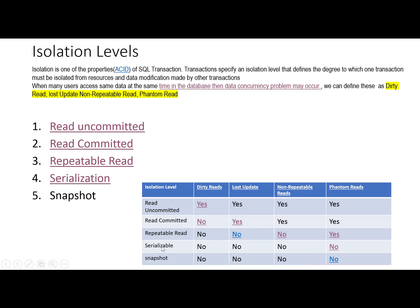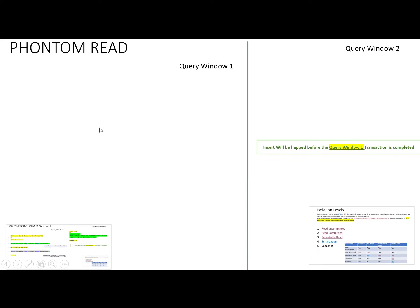While implementing serializable, the concurrency problem of phantom reads which comes in the repeatable read isolation level can be solved by implementing the serializable isolation level. First we will see the serializable isolation level and the phantom reads problem. This is an example showing the phantom read concurrency problem which occurs when we are using the isolation level repeatable read.